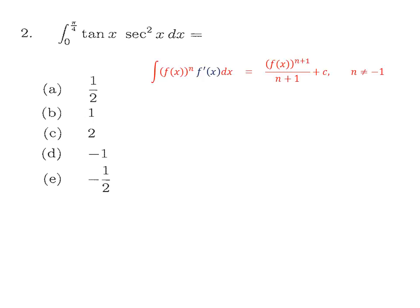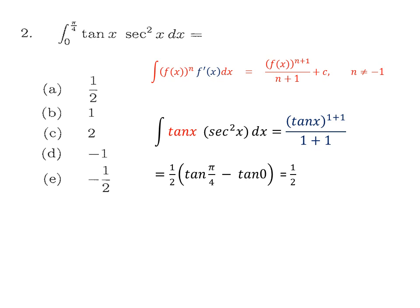For question 2, we use the formula: if we have a power function multiplied by its derivative, we can apply the reverse chain rule — add 1 to the power and divide by the same number. Here tan(x) is the power function and its derivative is sec²(x), so we ignore sec²(x), add 1 to the power of tangent, and divide. Then applying the limits gives 1/2 as the final answer.